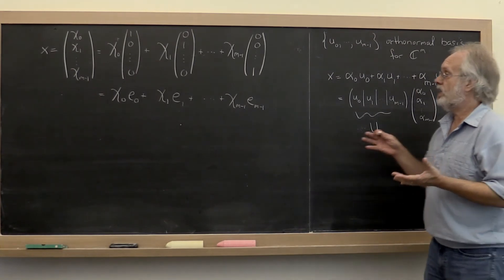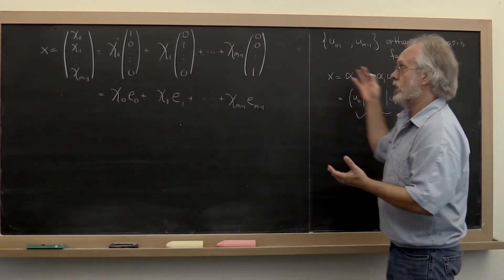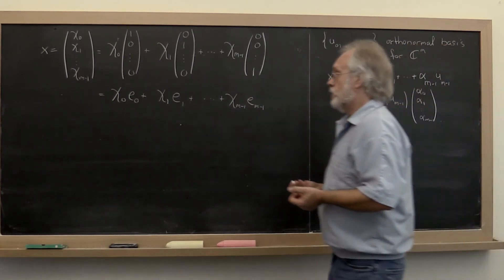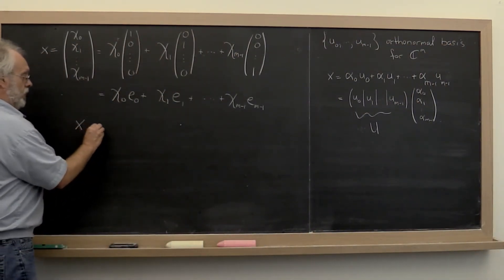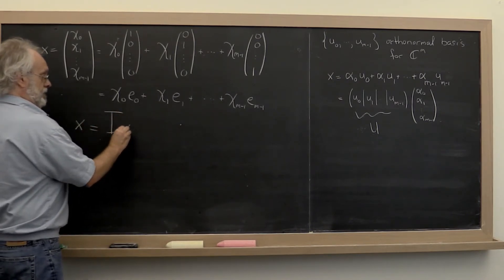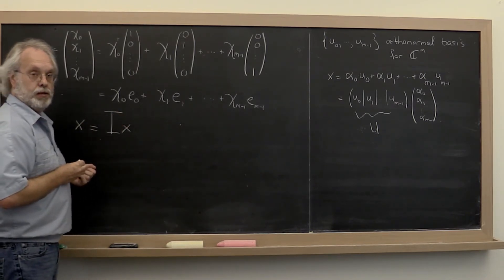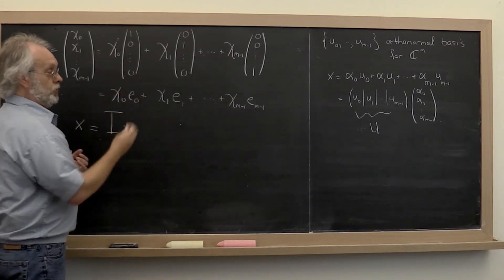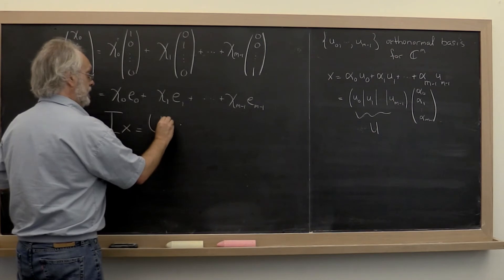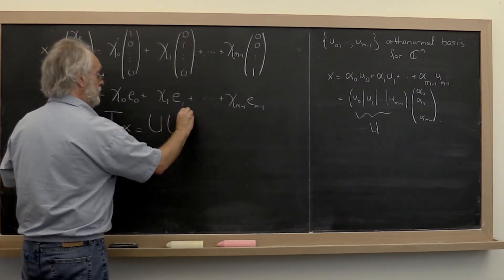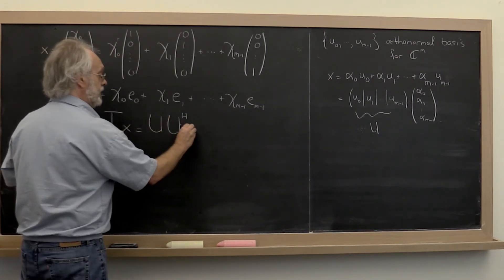Now how can we elegantly go from one to the other? Well, here we go. x we can write as the identity times x. But because U is a unitary matrix, we know that that's the same as U times U Hermitian transpose times the vector x.